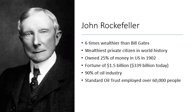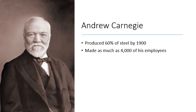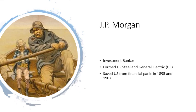The Standard Oil Trust employed 60,000 people with Rockefeller at the top. Andrew Carnegie was also one of the richest people who ever lived — he owned Carnegie Steel and all the means of production through vertical integration, producing 60% of the country's steel by 1900. Carnegie made as much as 4,000 of his employees every year. J.P. Morgan built an investment bank and formed U.S. Steel and General Electric — both companies still known today. Morgan was so wealthy he actually saved the U.S. from financial panic in both 1895 and 1907, giving money to the government to bail out industries.